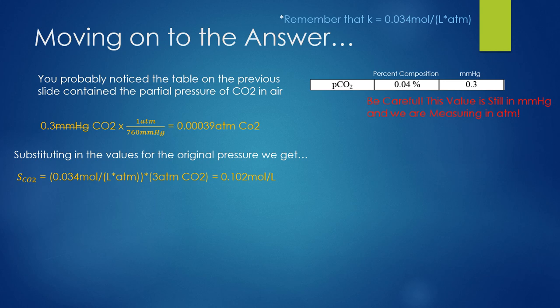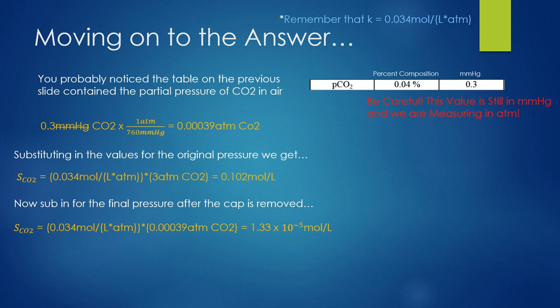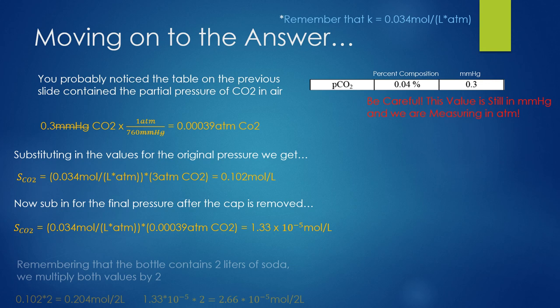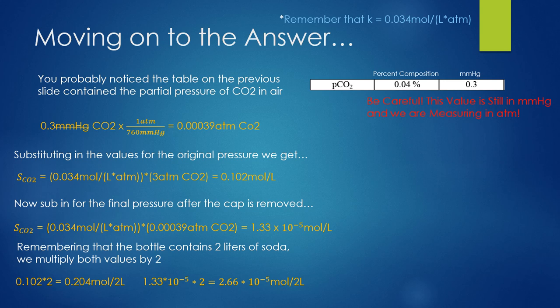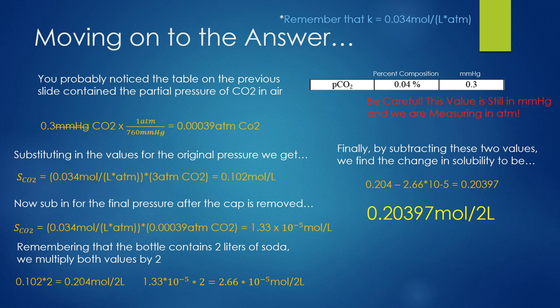Now we're in business. We have all the values needed to calculate the solubilities before and after, so let's do that. Subbing in three atmospheres and the k value, we get 0.102 moles per liter. Subbing in the partial pressure of CO2 in the atmosphere, we get 1.33 times 10 to the negative fifth. We do have to remember that this is asking for the amount of CO2 leaving in a 2-liter bottle, and because of this, we multiply both values by 2 to obtain the CO2 contained by 2 liters of soda. Finally, by subtracting these two values, we get the overall CO2 leaving the soda to be approximately 0.20397 moles per 2 liters.